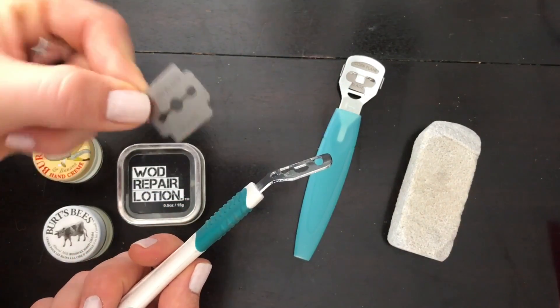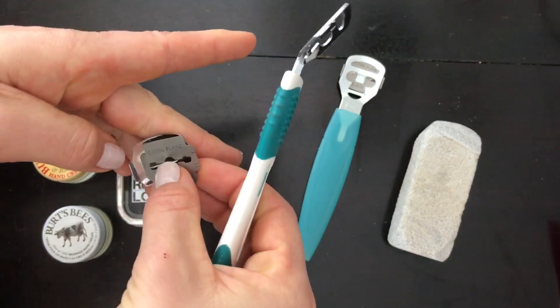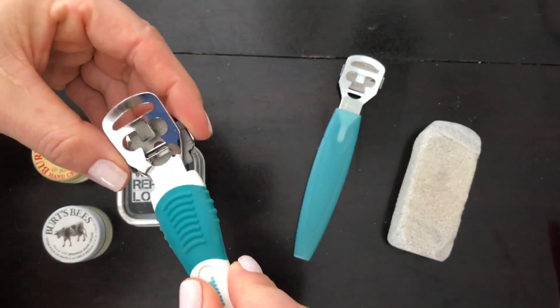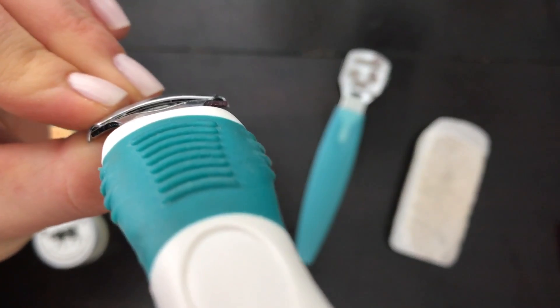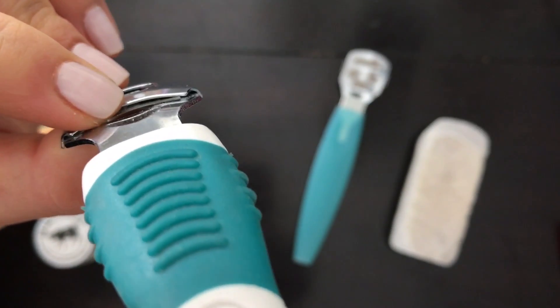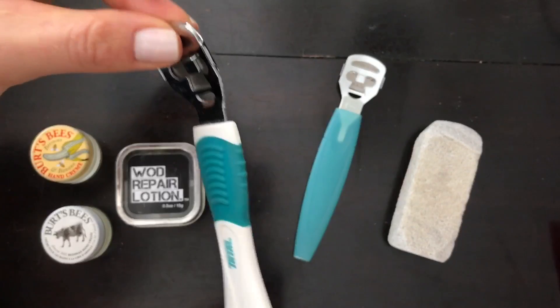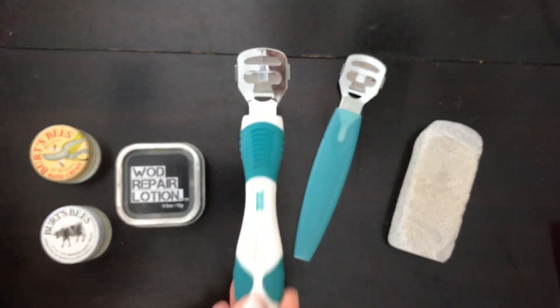They come with these itty-bitty little razor blades. They're called corn plane blades, and they just sit in these shavers with a very tiny little gap, you can see the razor blade right there, so that you can just pull off an itty-bitty teeny piece of skin.